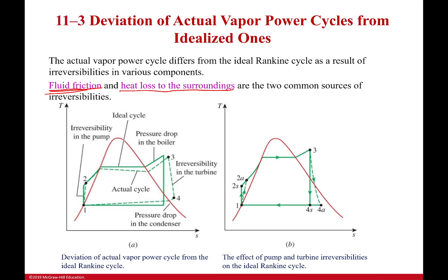Here's how we simplify the actual cycle. We get rid of any pressure drops in the condenser or in the boiler — those stay along the same path. We're taking into account the irreversibility in the turbine and the irreversibility in the pump.